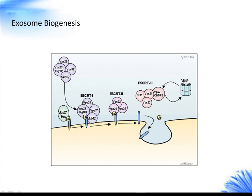ubiquitinated transmembrane proteins in the endosomal membrane, whereas ESCRT-I binds to the ubiquitinated cargo proteins and activates the ESCRT-II complex. ESCRT-I and ESCRT-II complexes therefore appear to be responsible for membrane deformation into buds with sorted cargo.